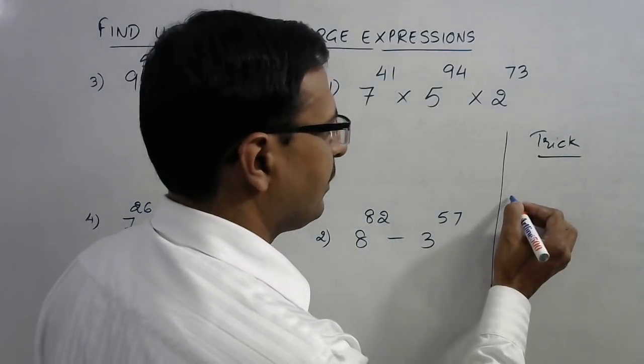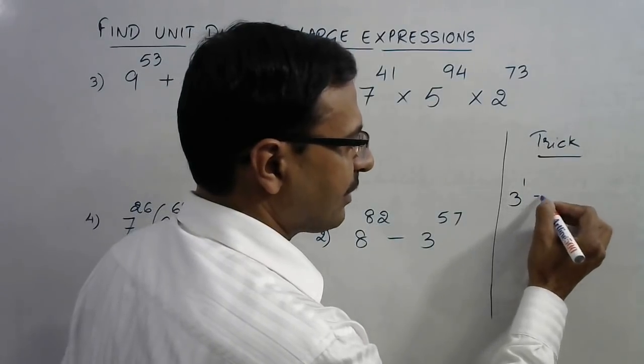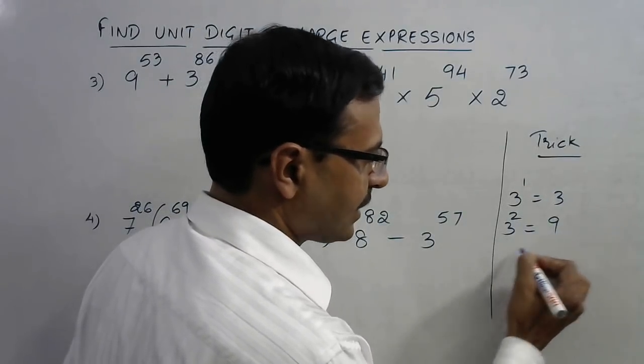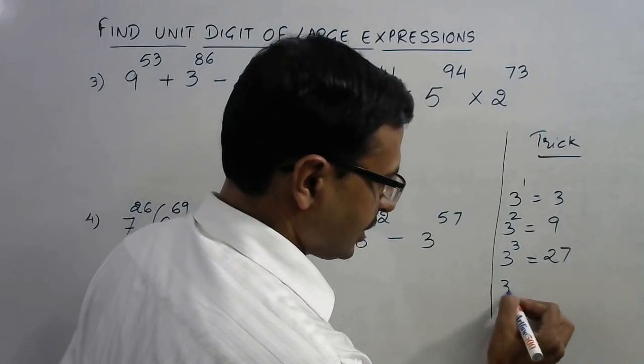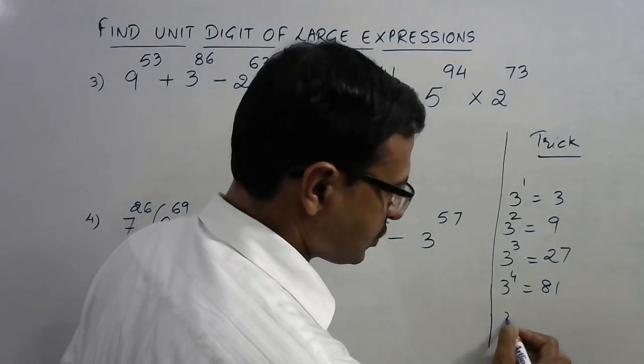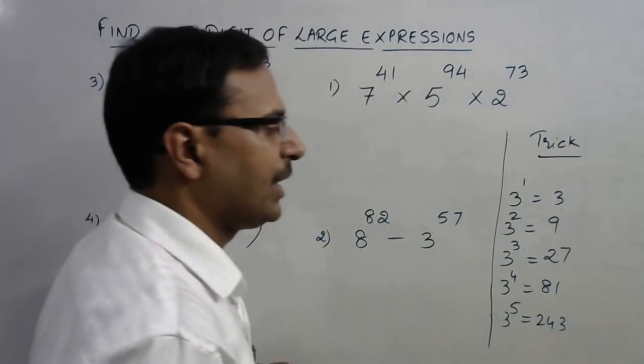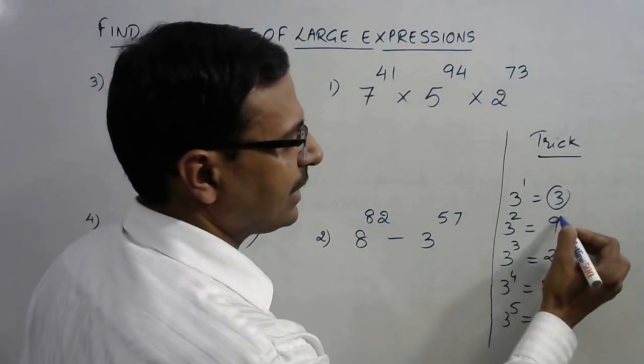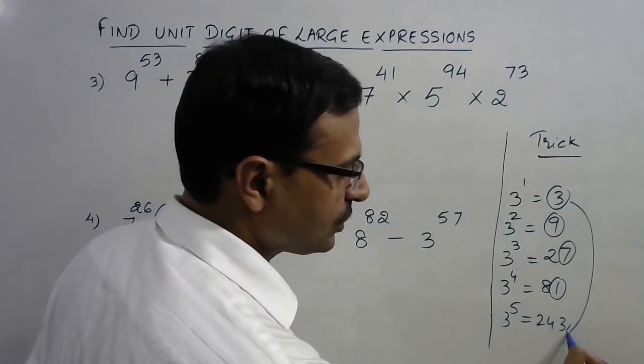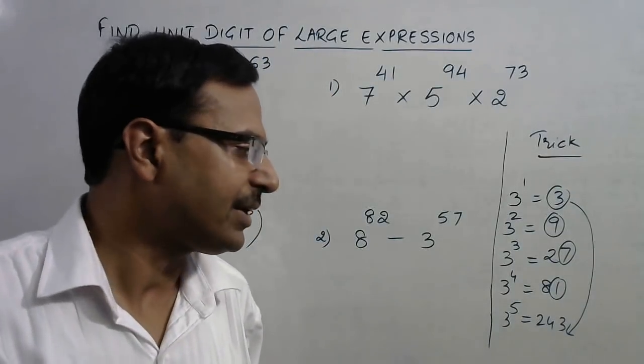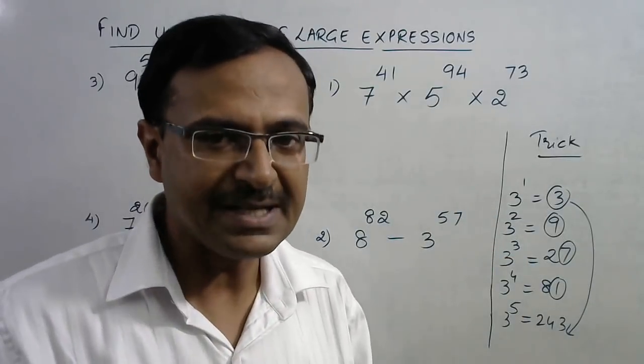Whenever we have a base and we want to find the power 1, then power 2, I will just write powers up to 5. 3 raised to the power 4 is 81 and then 3 raised to the power 5 is 243. Now, see the unit digit here: 3, then it changes to 9, changes to 7, changes to 1 and then back to 3. So, after every 4 powers, the unit digit repeats itself.